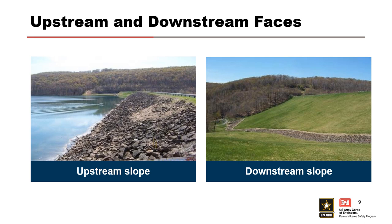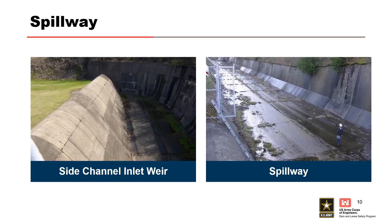The upstream embankment slope is covered with rock protection, with slopes ranging from 2.5 to 1 to 4 to 1. The downstream slope is grass covered with slopes ranging from 2 to 1 to 3 to 1. The spillway is a concrete-lined channel in the left abutment with a 250-foot long side channel inlet weir, 2,209 feet long and 50 feet wide, with walls and floor anchored into bedrock.